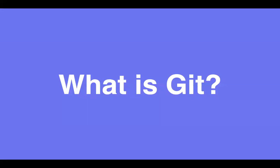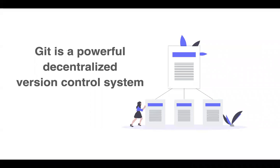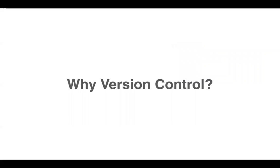Git is a distributed version control system for tracking changes in source code during software development. It is designed for coordinating work among programmers, but it can be used to track changes in any set of files with any file extension.